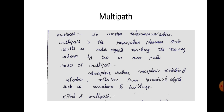If you are transmitting between a transmitter and receiver, the signal will be received at the receiver side, but it will be received at different times. That means it will be travelling through different paths and received at the receiver at different times. So we can define multipath as the propagation phenomenon that results in the radio signals reaching the receiving antenna by two or more paths.